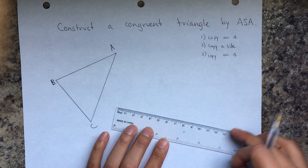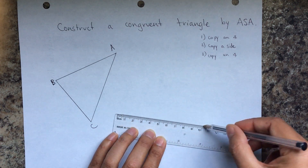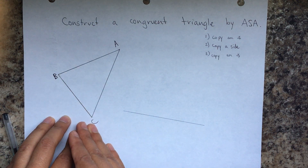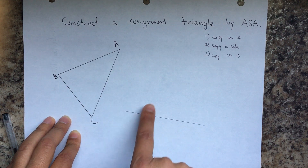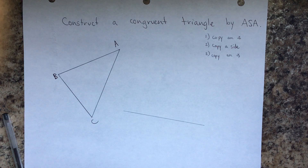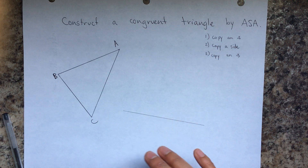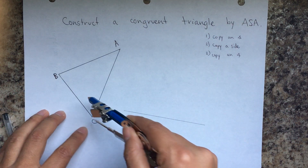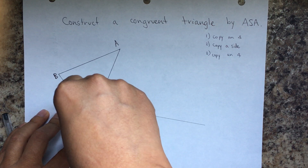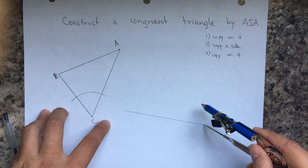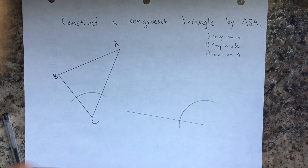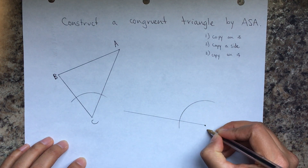To copy an angle, remember, the first thing we need to do is draw a line. It doesn't matter if you orient it differently — our triangle is just going to be slightly translated and rotated. To copy an angle, draw an arc on the angle you're going to copy. I'm going to copy angle C, so I draw an arc on the triangle and also where I'm going to transfer it — this is going to be my C prime.